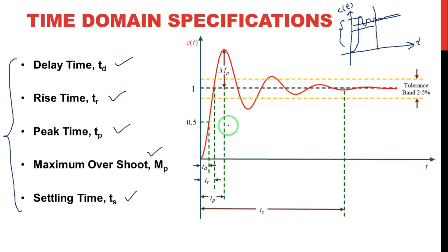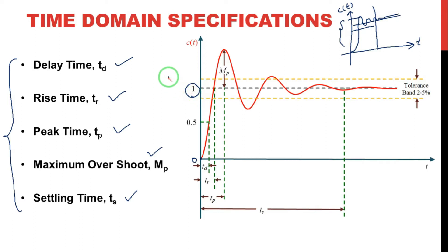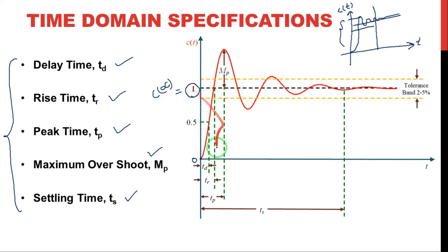Before going to understand delay time, we need to know the initial value and final value. The initial value is the value at time t equal to zero. The final value is the value the system reaches at the input — for a unit step input, the unit is the final value, meaning one. So c of infinity is the final value output, which is one.